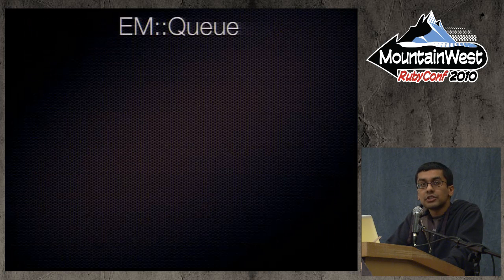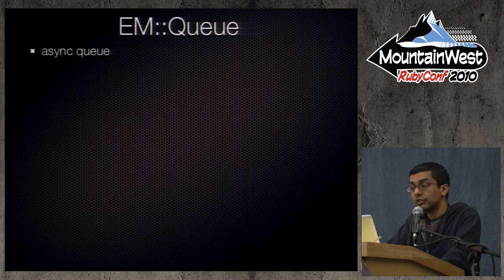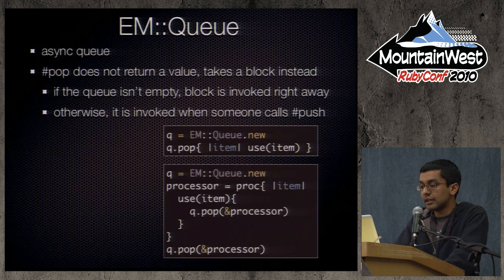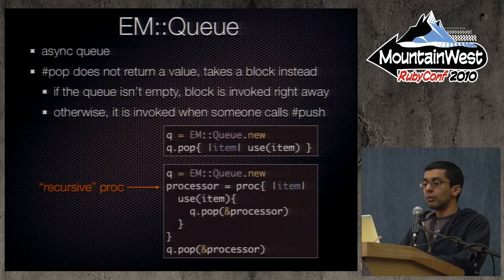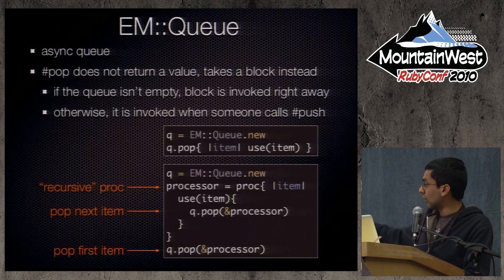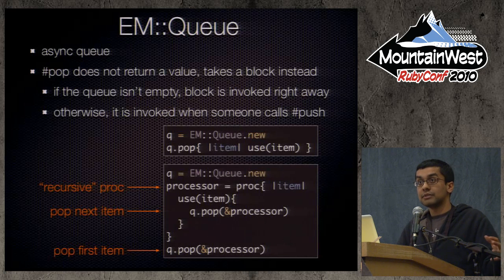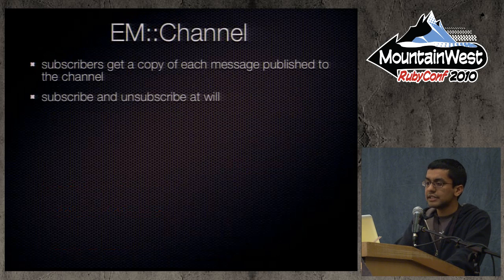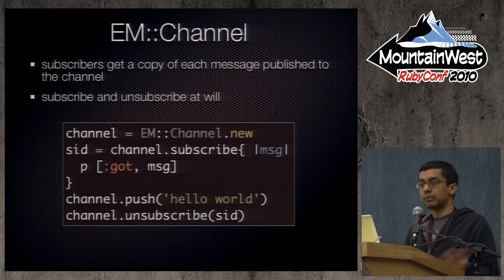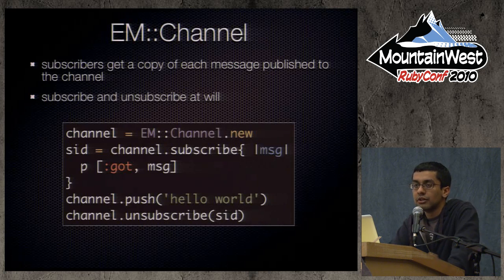A couple more helpers. Queue provides an asynchronous queue. Instead of pop returning a value, it takes a block. If the queue is empty, it stores that block and invokes it as soon as somebody pushes. If the queue is not empty, it invokes it right away. There's a recursive proc technique here — you start one worker that pops one item off the queue, and as soon as it's done, it pops another. If you do that five times, five things happen in parallel. Very similar is Channel — the difference is instead of one person getting the message, many can subscribe and all receive it. You can subscribe and unsubscribe.